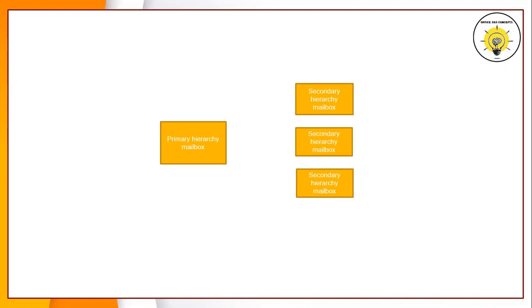To address these issues, the push mode was introduced. In push mode, hierarchy synchronization is driven by the primary mailbox. In this model, the primary mailbox proactively notifies all the secondary mailboxes whenever there is a change within the hierarchy. Secondary mailboxes do not have to contact the primary mailbox to pull the changes. The primary public folder mailbox will automatically notify all the secondary public folder mailboxes.